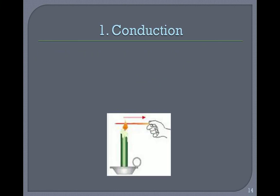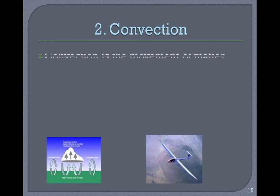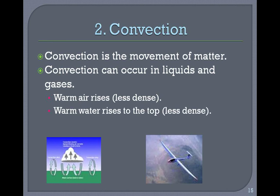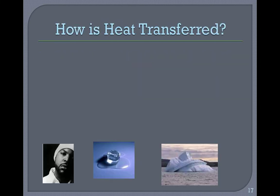Heat transfer — three types: conduction, convection, and radiation. Conduction is the transfer of heat between neighboring molecules. Example: water in a pot getting warmed from the heat of the surrounding pot. Convection is the movement of matter; it can occur in liquids and gases. Warm air rises; warm water rises to the top because it's less dense — think of a convection oven. Radiation: electromagnetic waves transfer energy from an energy source. Examples: the sun, cell phones, or radioactive particles.